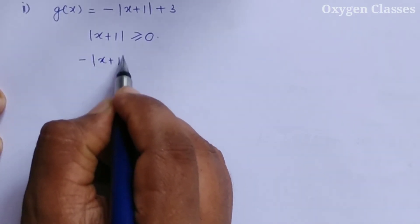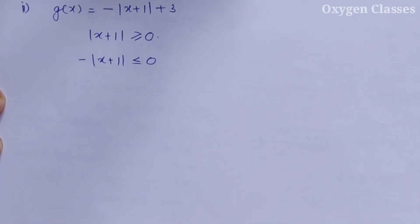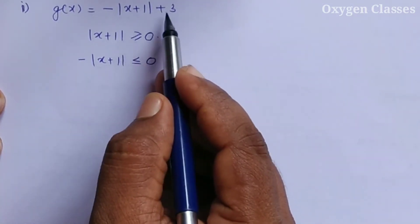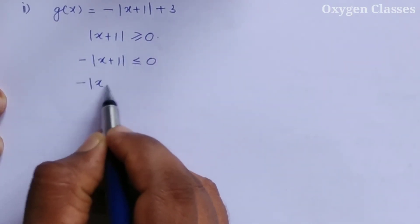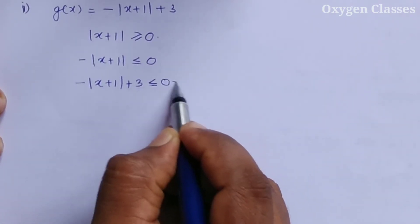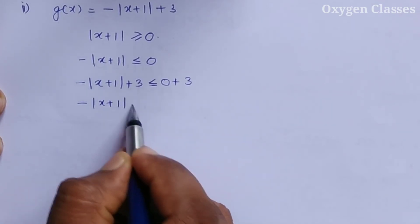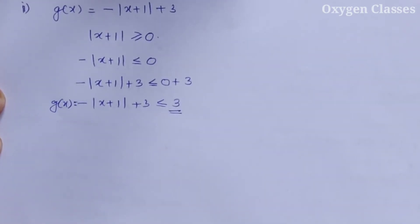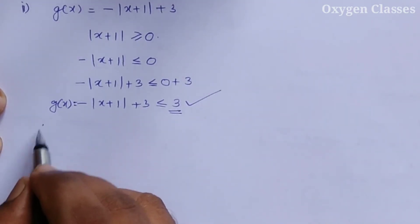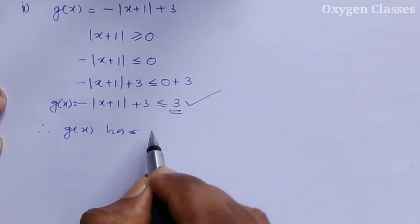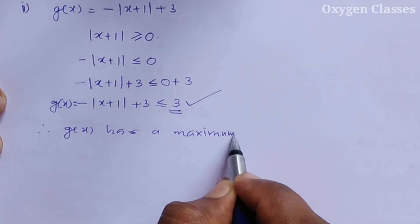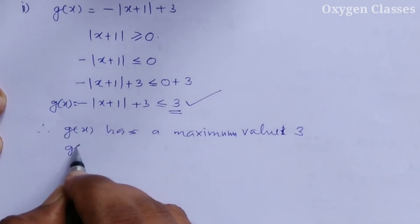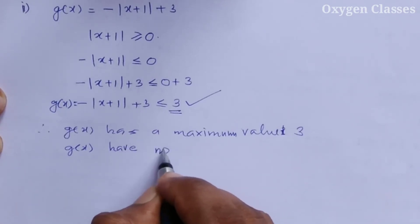For the next function, minus mod x plus 1 is less than or equal to 0. Adding 3 to both sides: minus mod x plus 1 plus 3 is less than or equal to 3. So g of x is less than or equal to 3, meaning g of x has a maximum value of 3, and has no minimum.